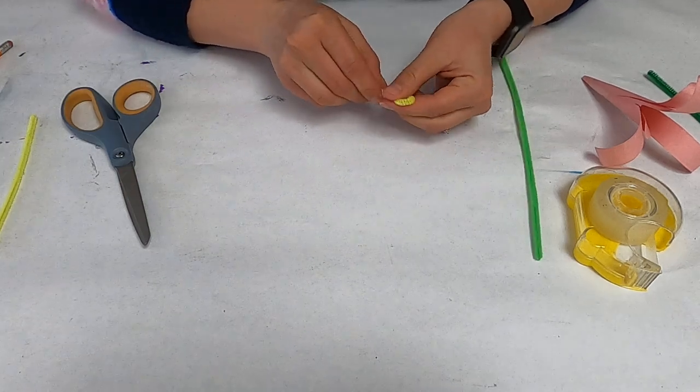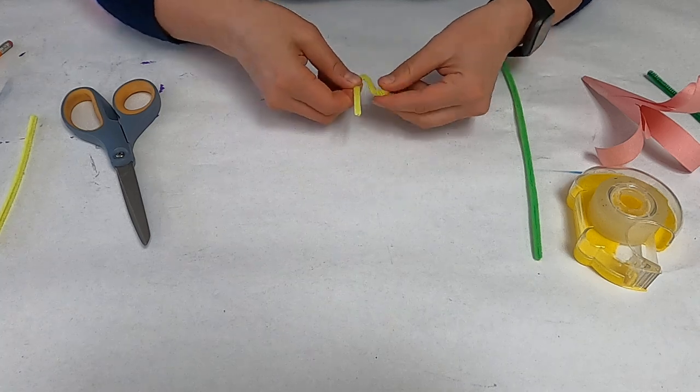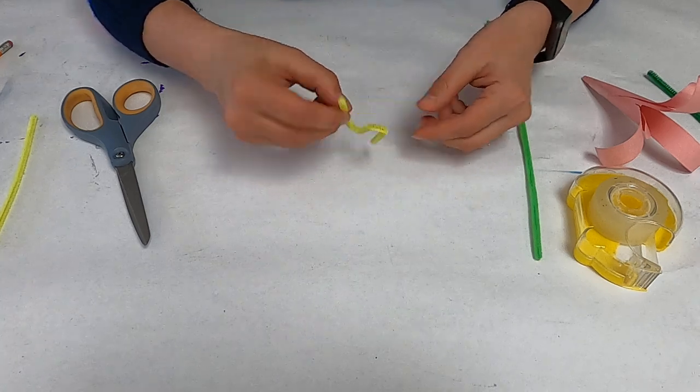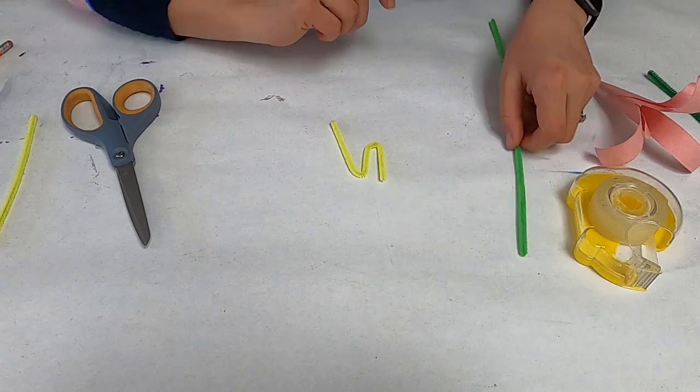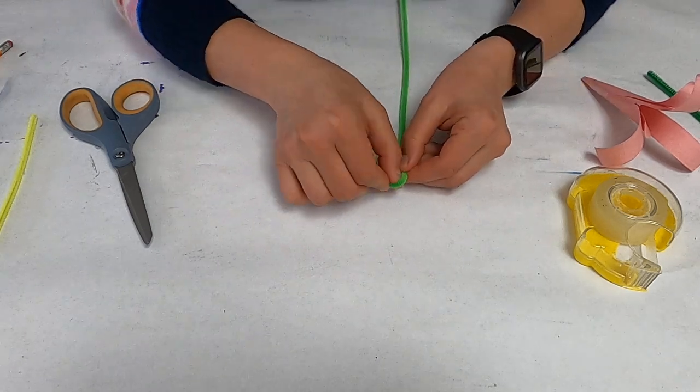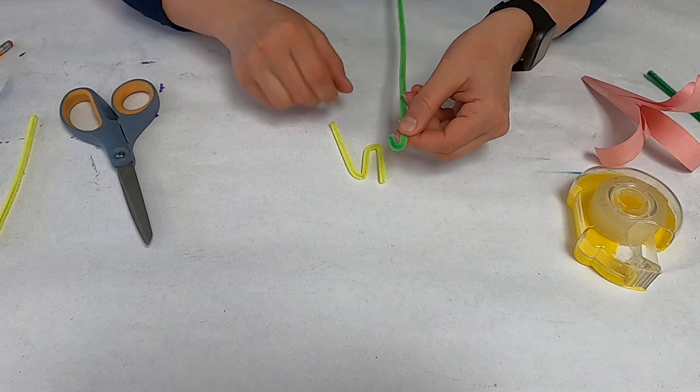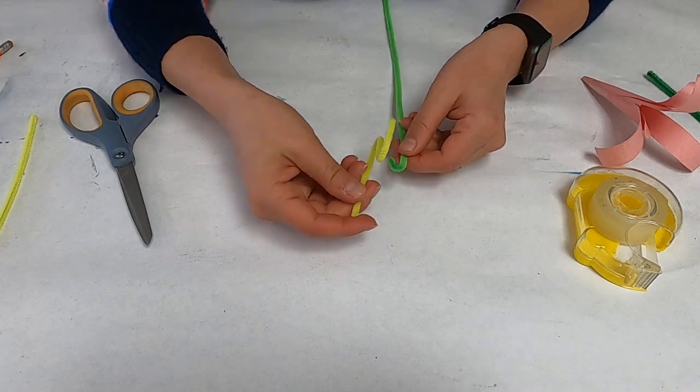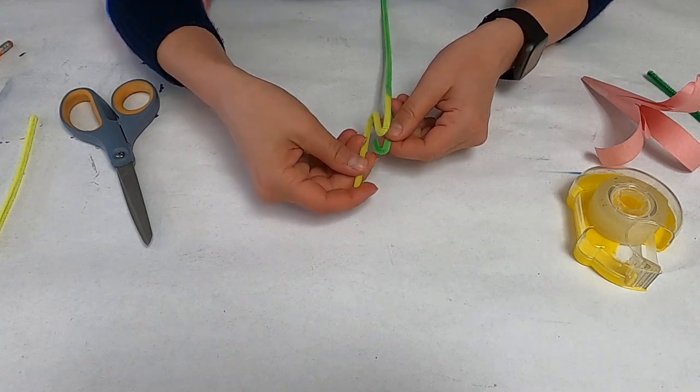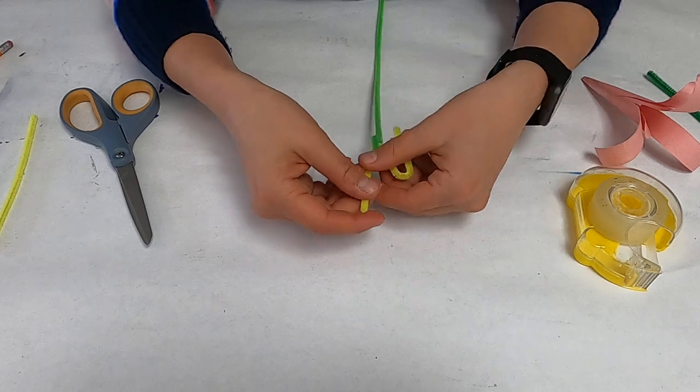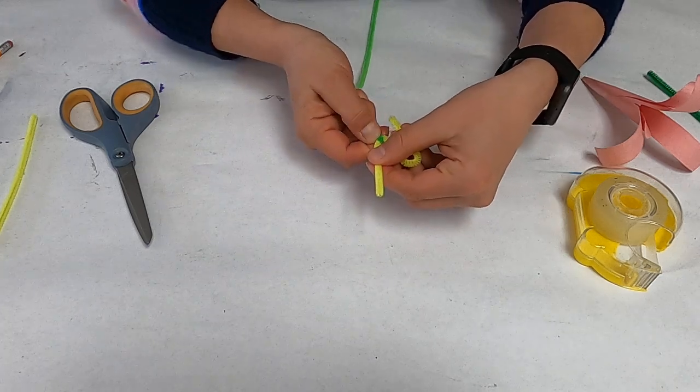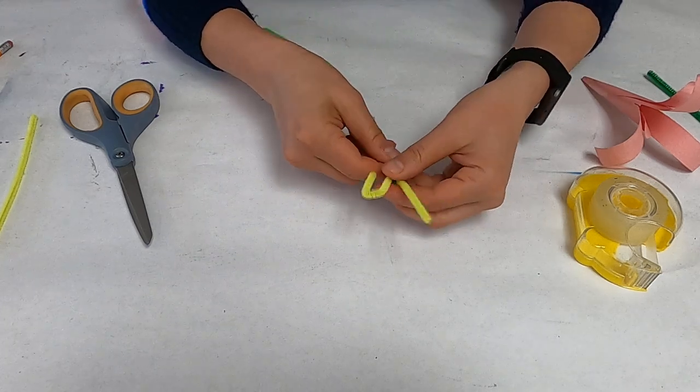You want to bend it so it looks kind of like this. Then you want to take your green and put a little hook in it like this. So what we're going to do is hook this part right here like this, and we're going to push down the green part.